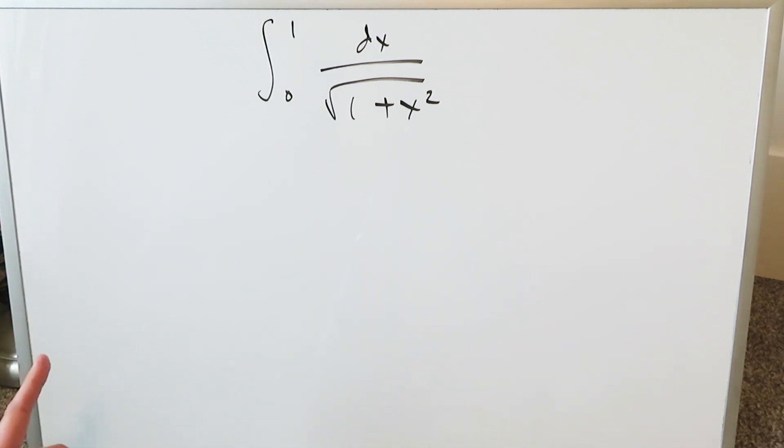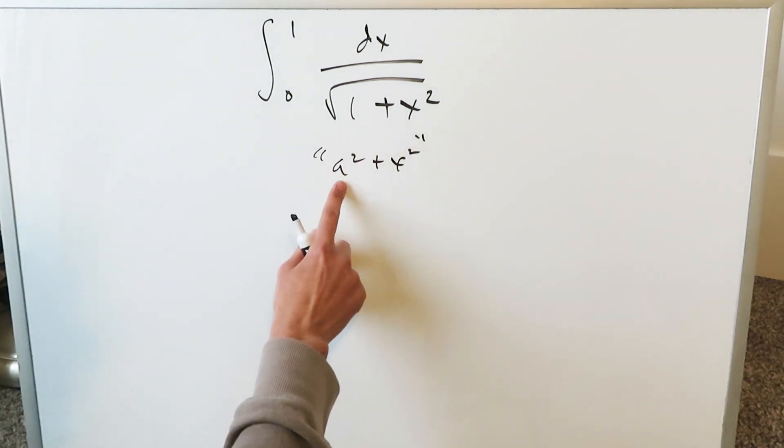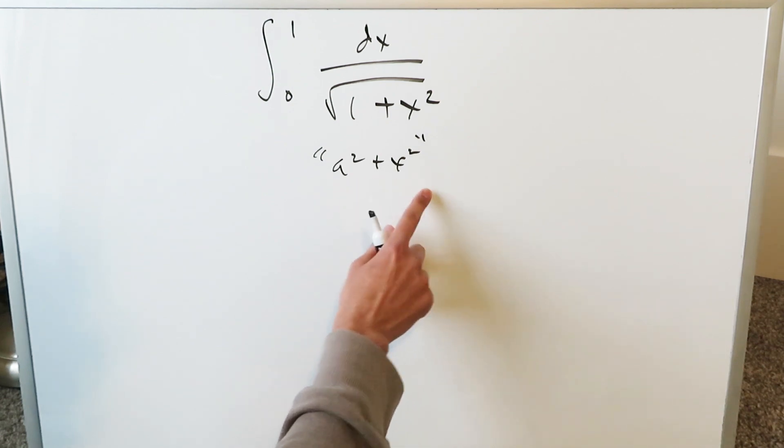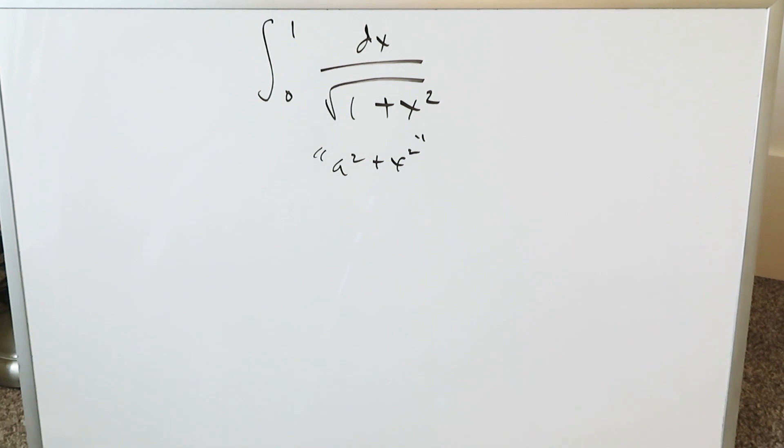We will utilize two different routes to integrate this. We have the trigonometric route which most students will lean towards and then there's also that hyperbolic, particularly the inverse hyperbolic route available. Students are generally thinking about the trigonometric route. So let's start with that.